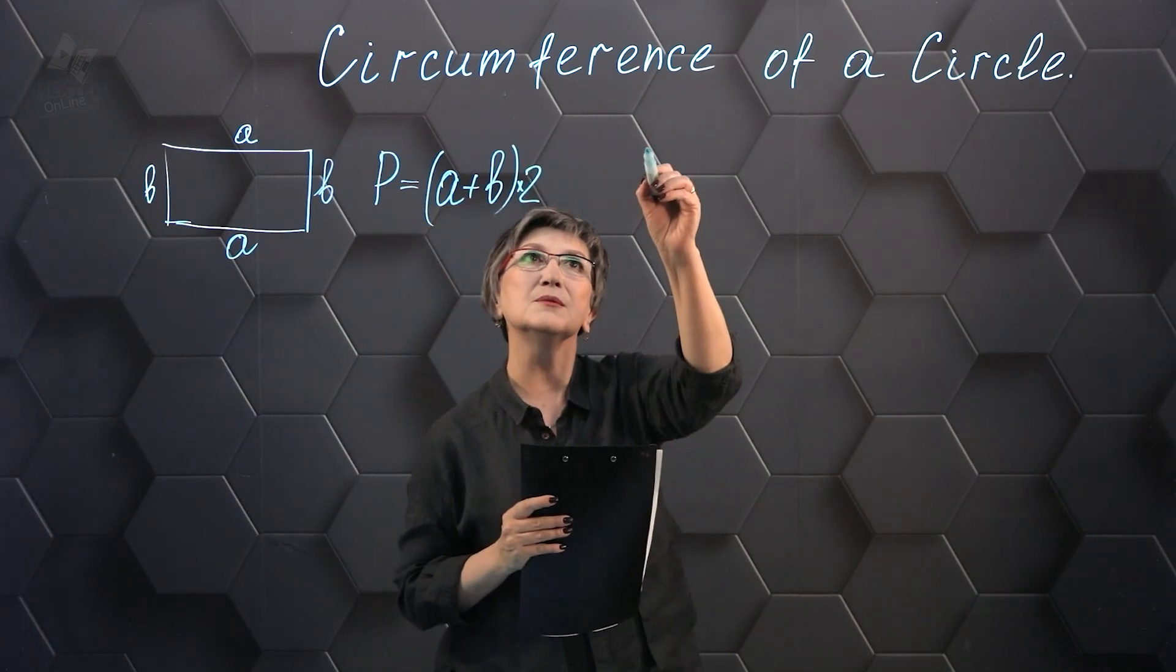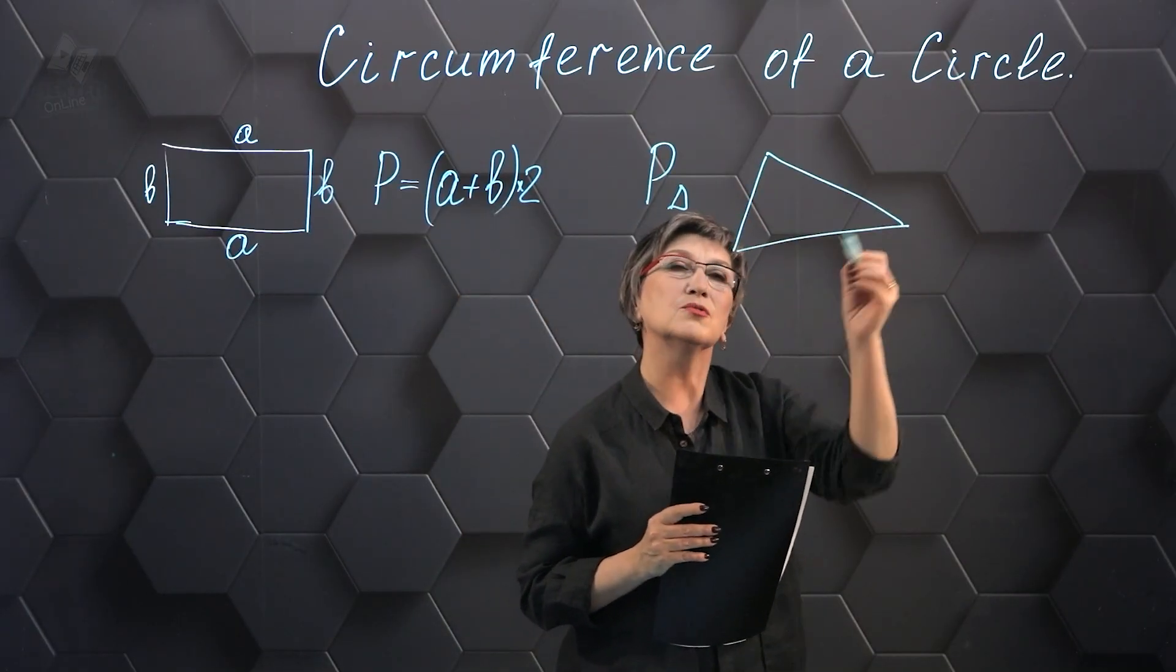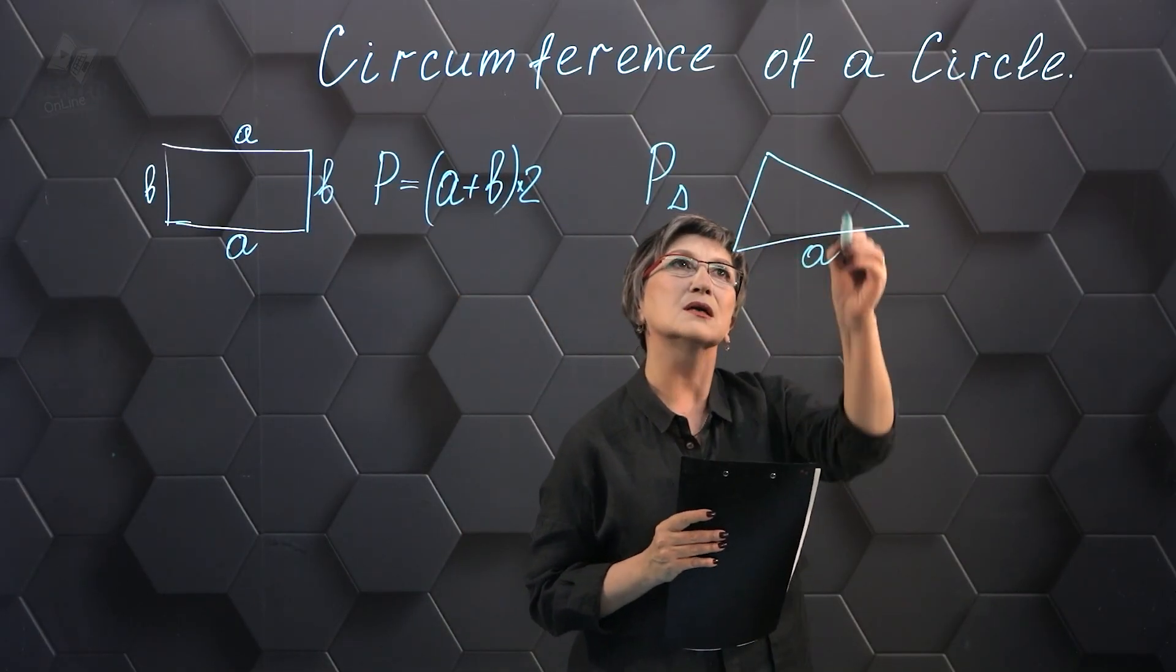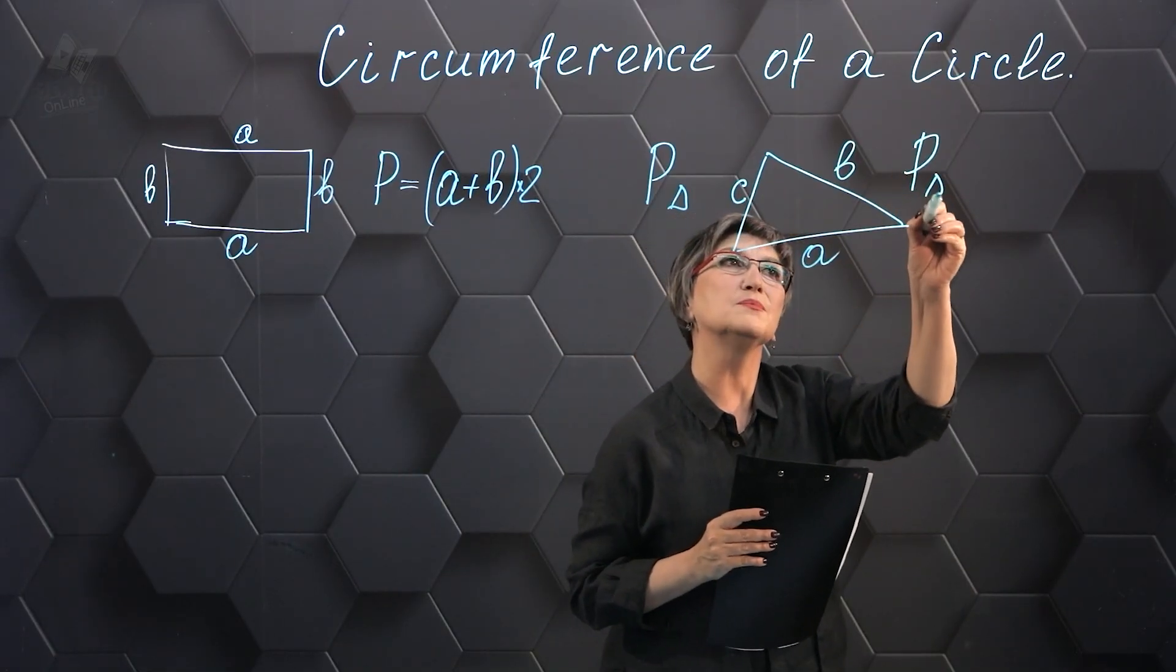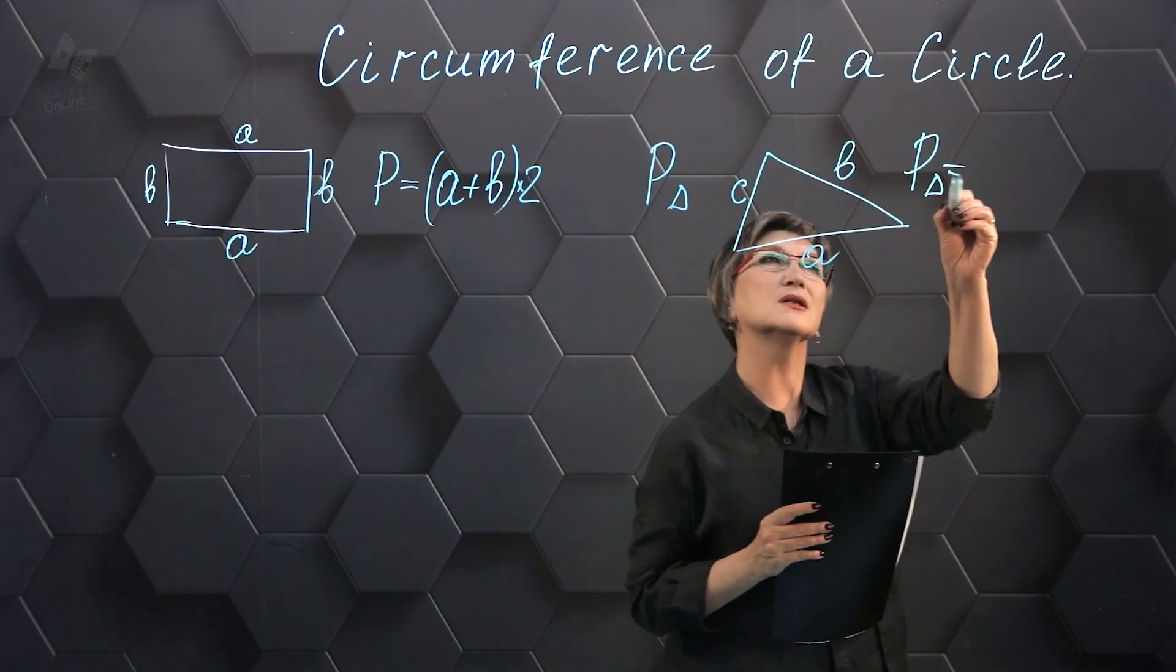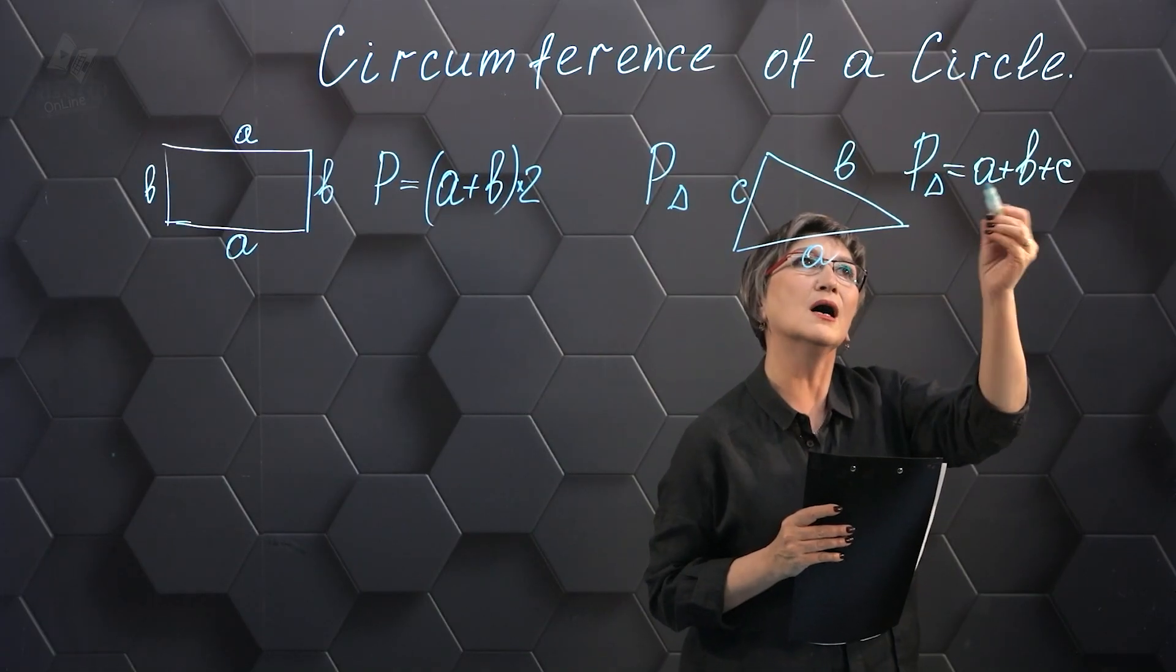If I need to find the perimeter of a triangle, then I have three sides to the triangle: side A, side B, and side C. And in order to find the perimeter of the triangle, I have to add up the lengths of the three sides: A + B + C.